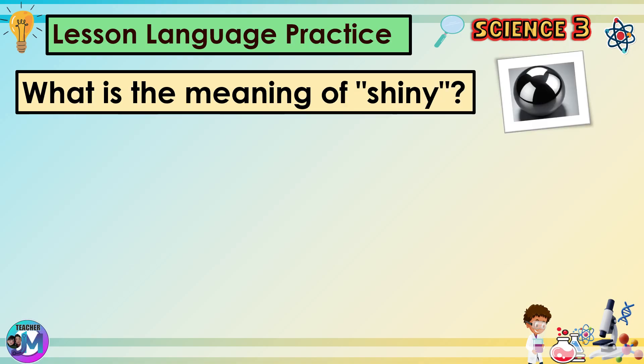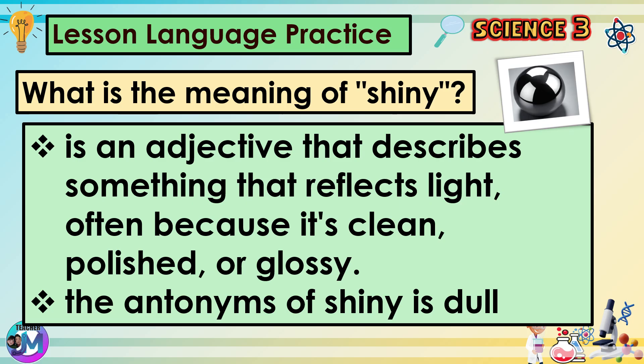What is the meaning of shiny? Shiny is an adjective that describes something that reflects light, often because it's clean, polished, or glossy. The antonym of shiny is dull.